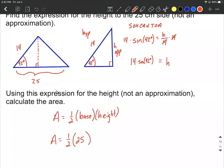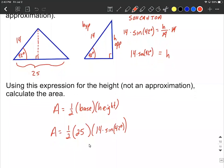And then the height, we just said, was represented by 14 multiplied by the sine of 42 degrees. Now, we could do just a little bit of simplifying that we have one half multiplied by 25 multiplied by 14. Well, half of 14 is 7, and 7 times 25 is 175 multiplied by bringing along the sine of 42 degrees.